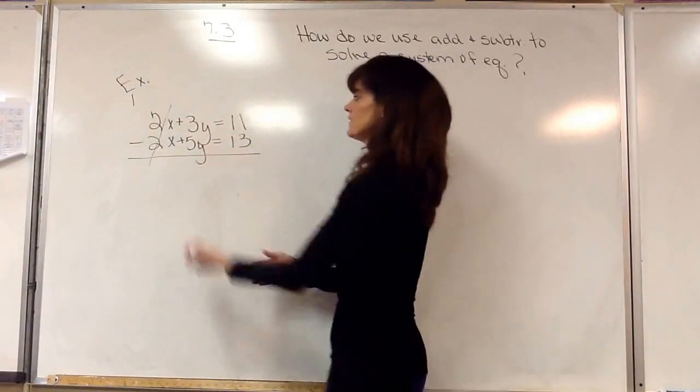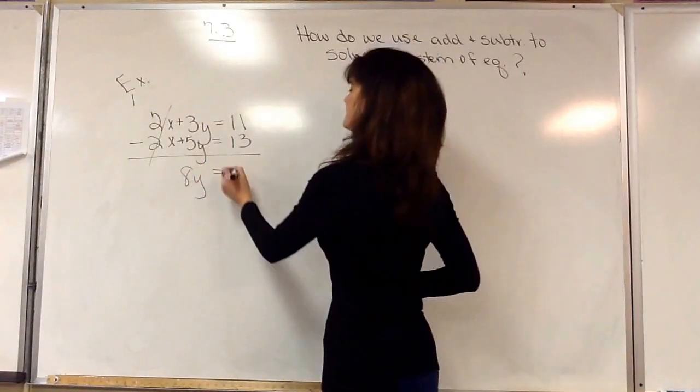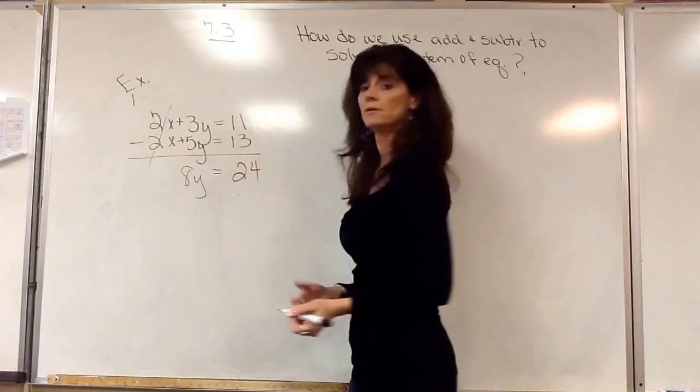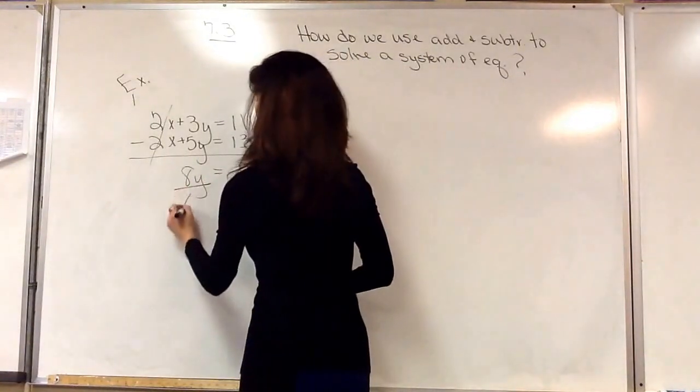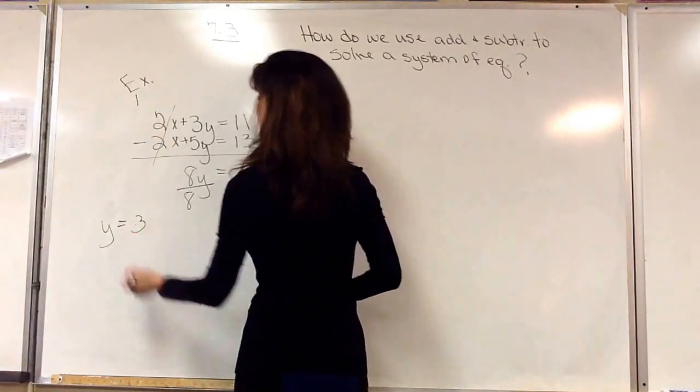We're going to add the y's together, 8y, and then add the 11 and 13 together, 24. And then of course we know what we're going to do. We're going to divide both sides by 8 and y is equal to 3.